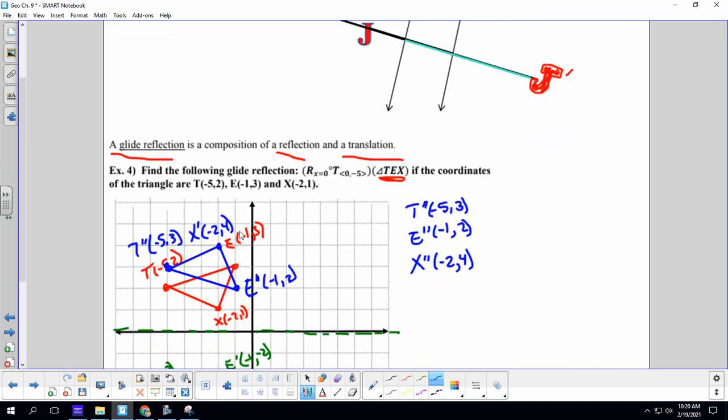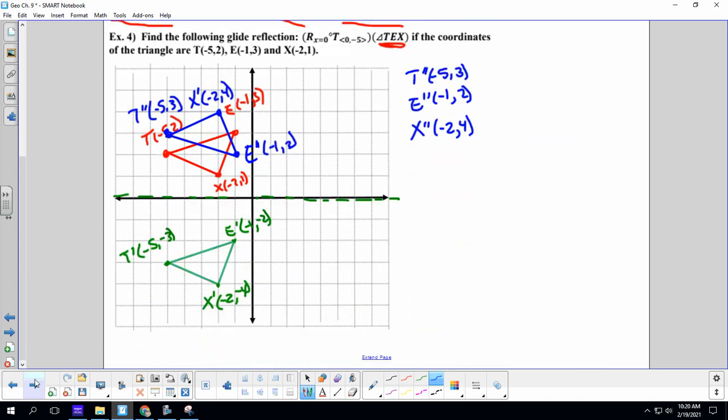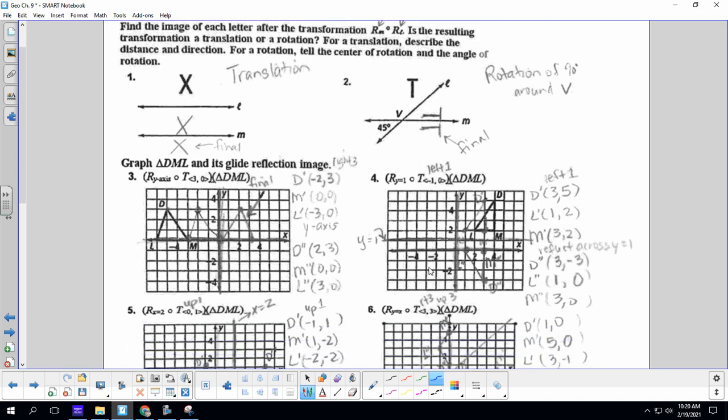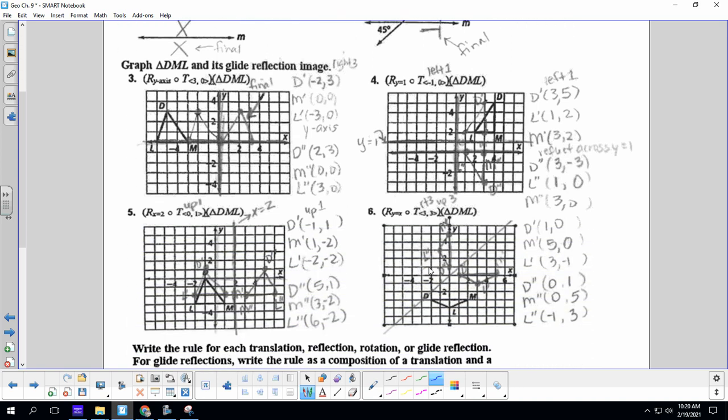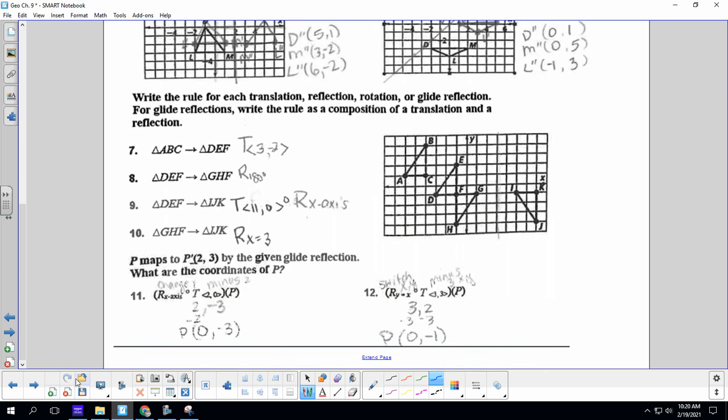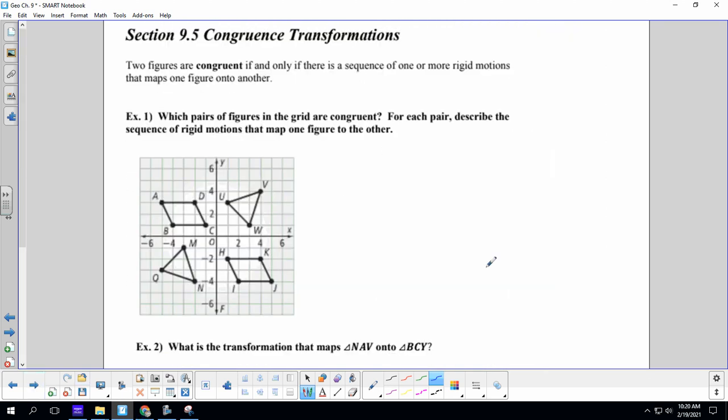Take a moment right now, complete the 9-4 practice. It is the worksheet within the packet that you guys were given. Check your answers. Make sure that you label those coordinates. And let's move on to 9-5. Remember, this is a combination one.